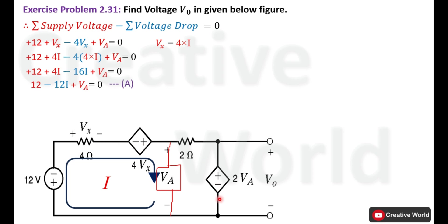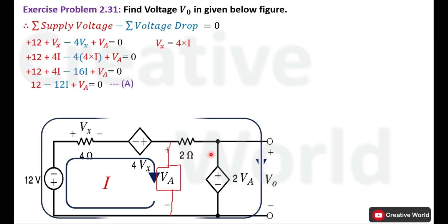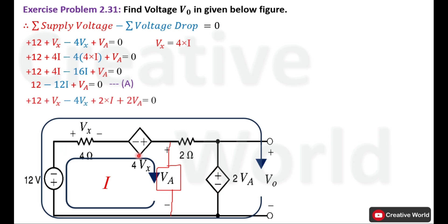Now move to the outer loop of the circuit, where we will apply Kirchhoff's Voltage Law. We assume the direction of current clockwise — you may take counter-clockwise as well. Current i will be flowing through this outer loop. Write the KVL equation for this outer loop. We start from the voltage source: current entering terminal is positive, so plus 12 volts. Move to next element: current entering terminal is positive, so plus Vx. Move to next element: current entering terminal is negative, so this voltage dependent source 4Vx is taken with minus sign.